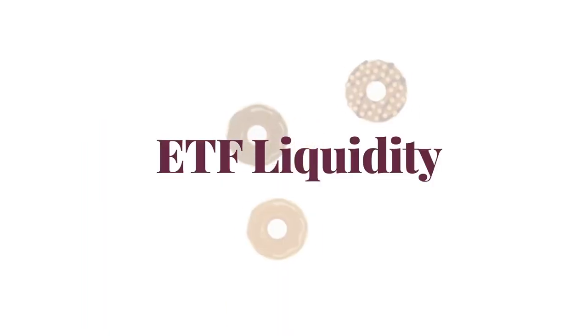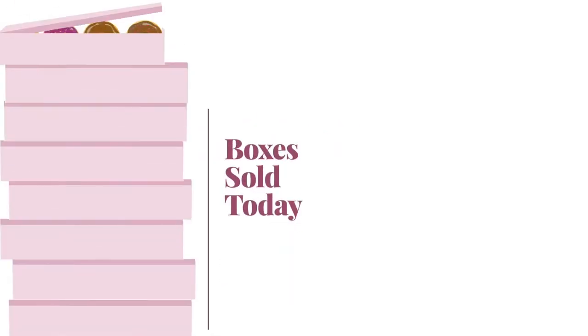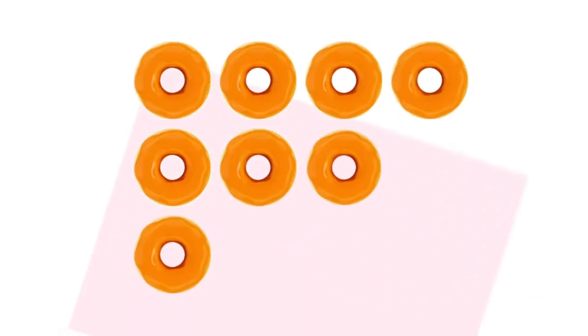So instead of average daily volume, what is a good indicator of ETF liquidity? Introducing Implied Liquidity. Implied Liquidity looks beyond how many boxes of donuts are sold on an average day, and considers the availability of the individual donuts that go into the boxes.